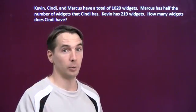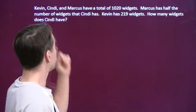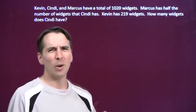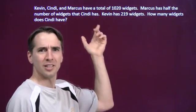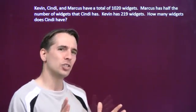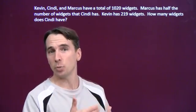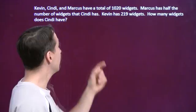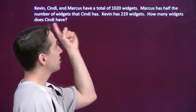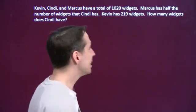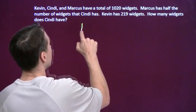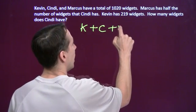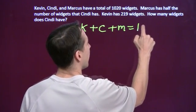We will need variables. We'll have variables for Kevin, Cindy, and Marcus. Now we could choose A, B, and C, but that would be confusing because then C would stand for Marcus instead of Cindy. We like to choose variables that remind us what the variables mean. So we'll choose K for Kevin, C for Cindy, M for Marcus. And this first sentence is an equation. All these words just mean K plus C plus M is 1,020.